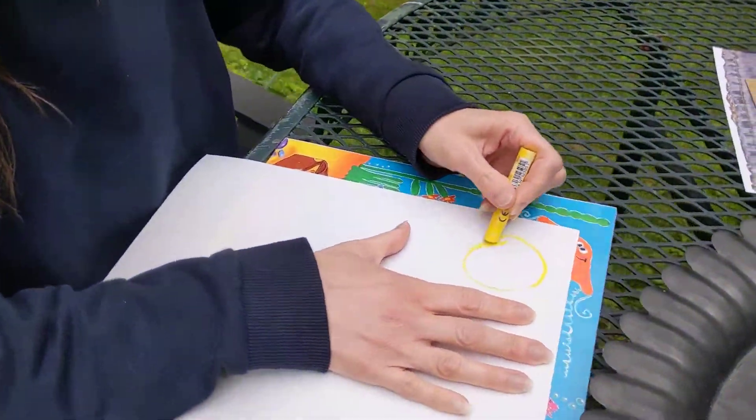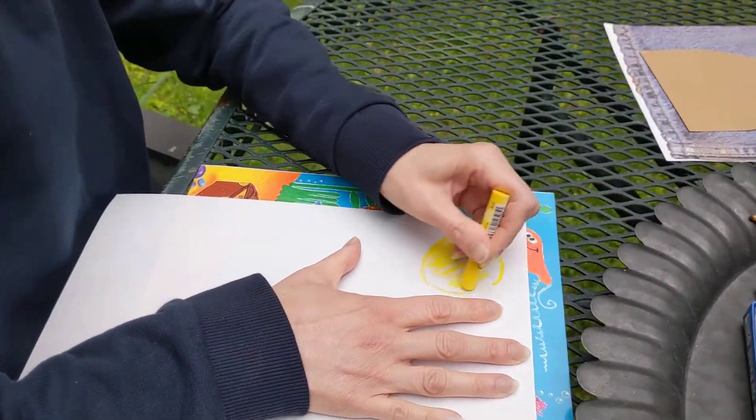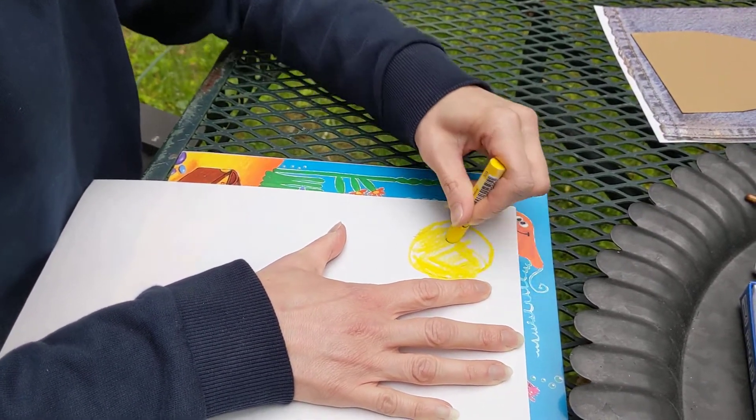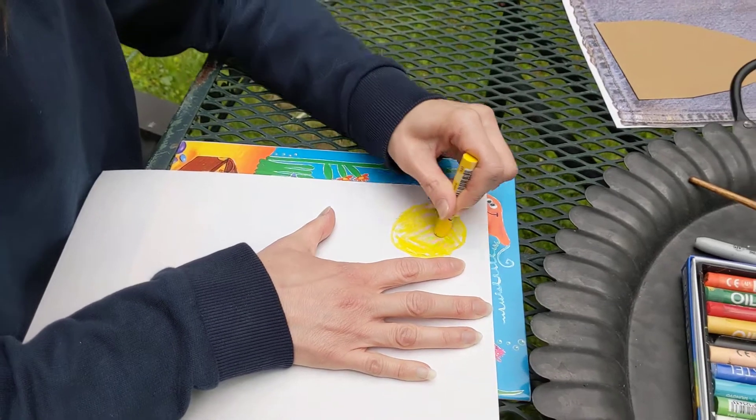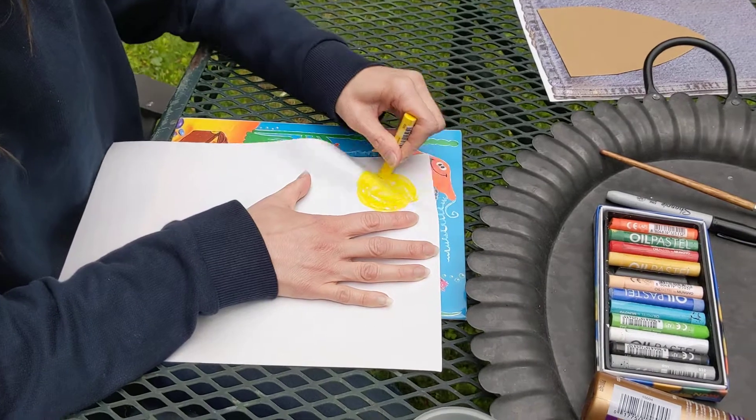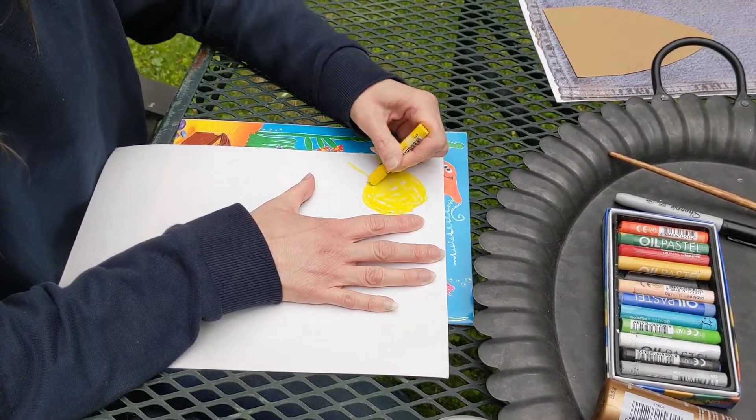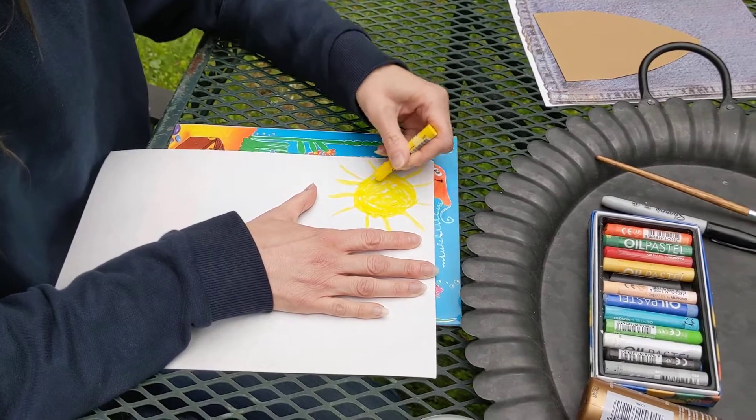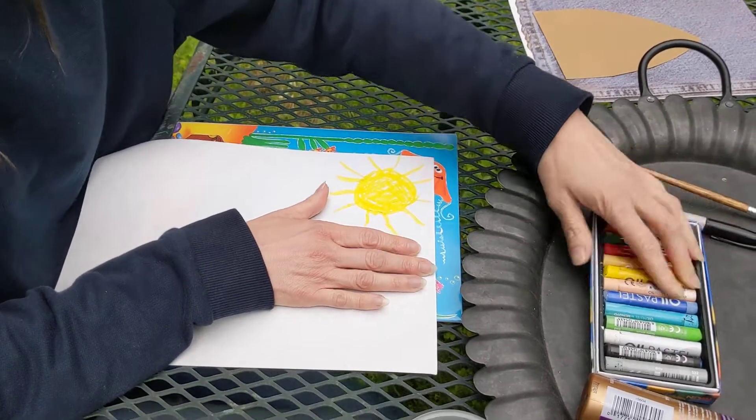And then after I do this I'm going to add the watercolor, so it'll be a little crayon resist with the rays of sun coming off. And the pastels - the water will roll right off the pastels.